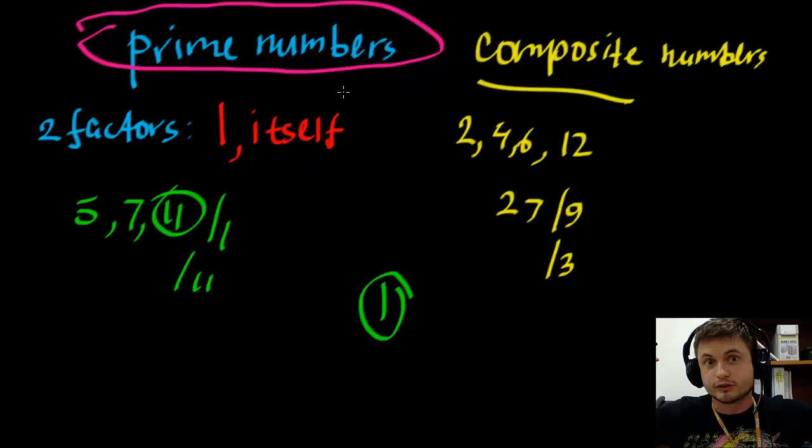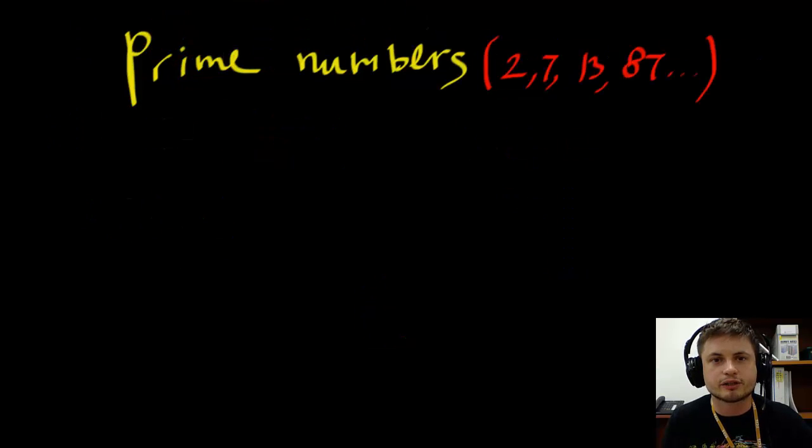Now historically, prime numbers were actually discovered a long time ago by ancient Greeks, something like 2500 years ago. But then between that and today, for almost 2500 years, for over 2000 years, nobody really cared about prime numbers except actually for this one guy.